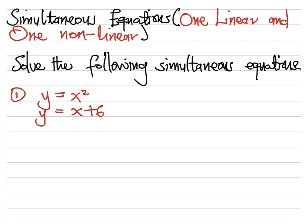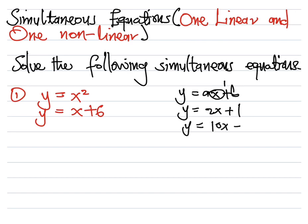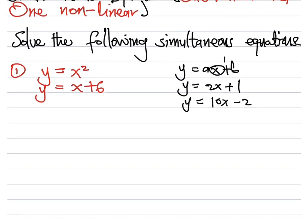When we talk about a linear function, it is of the form y = ax + b, where the highest power of the x term is 1. So it could be y = 2x + 1 or y = 10x − 2. You can see that the highest power of x is 1.